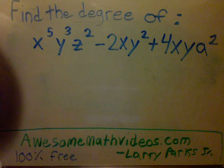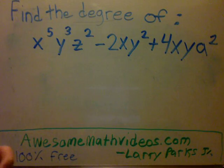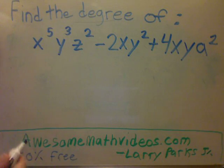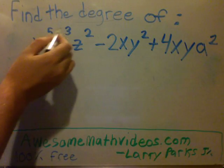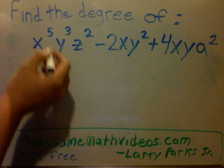To find the degree is very simple. You look at the exponents. If you don't remember where the exponents are, the exponents are the numbers on the top. And you just add them up.